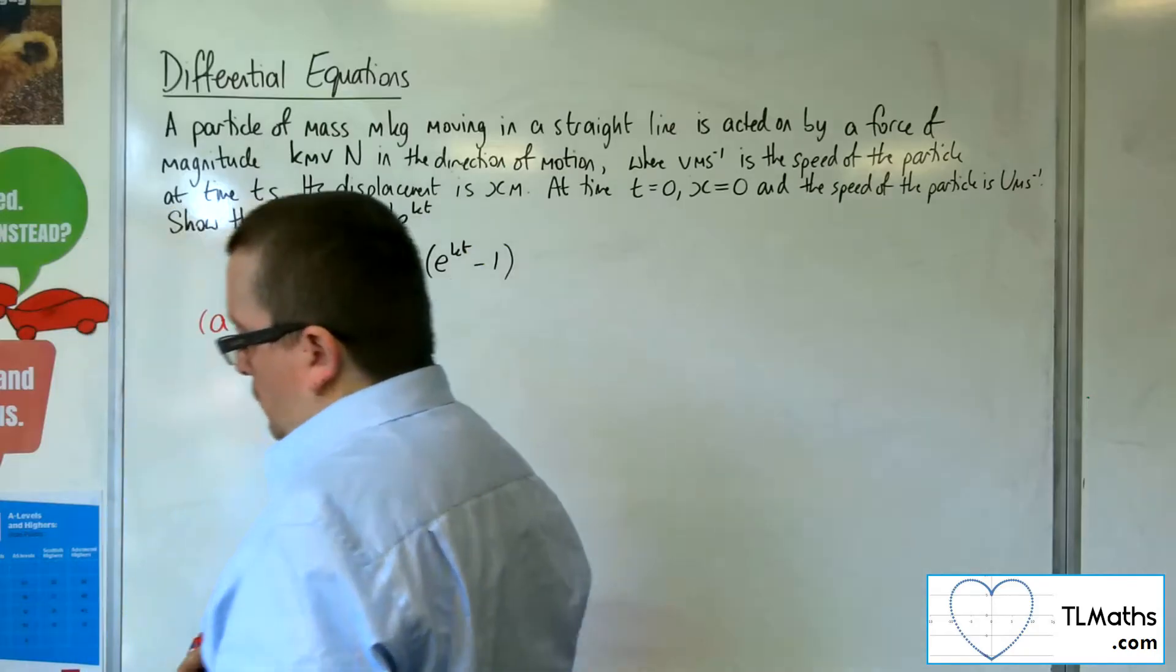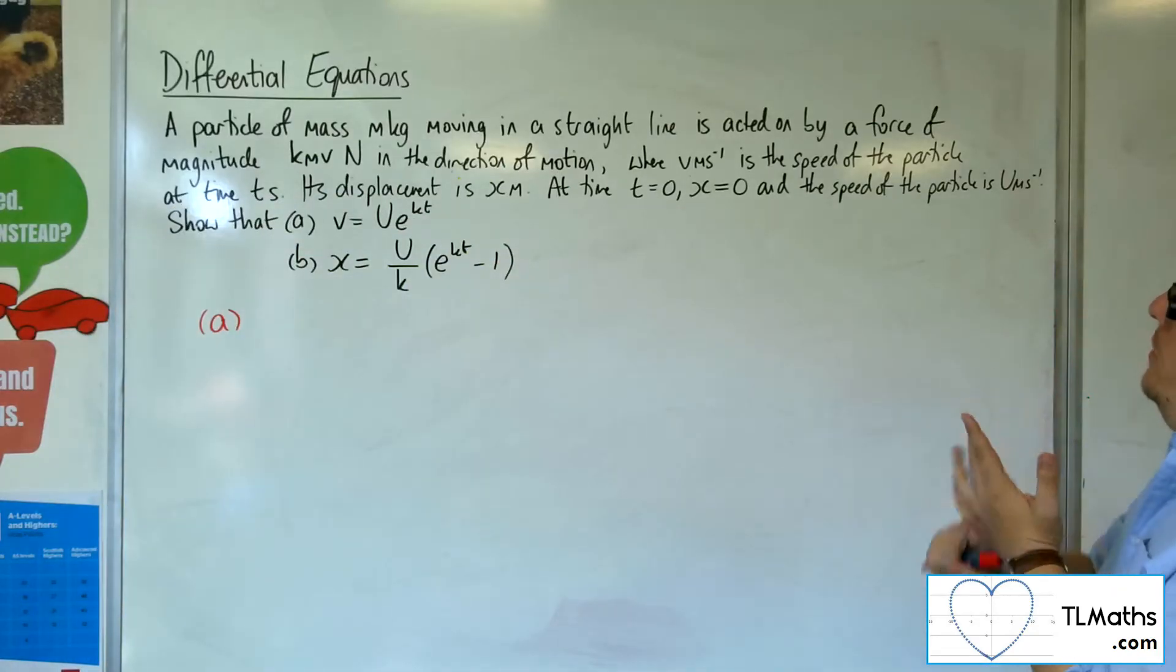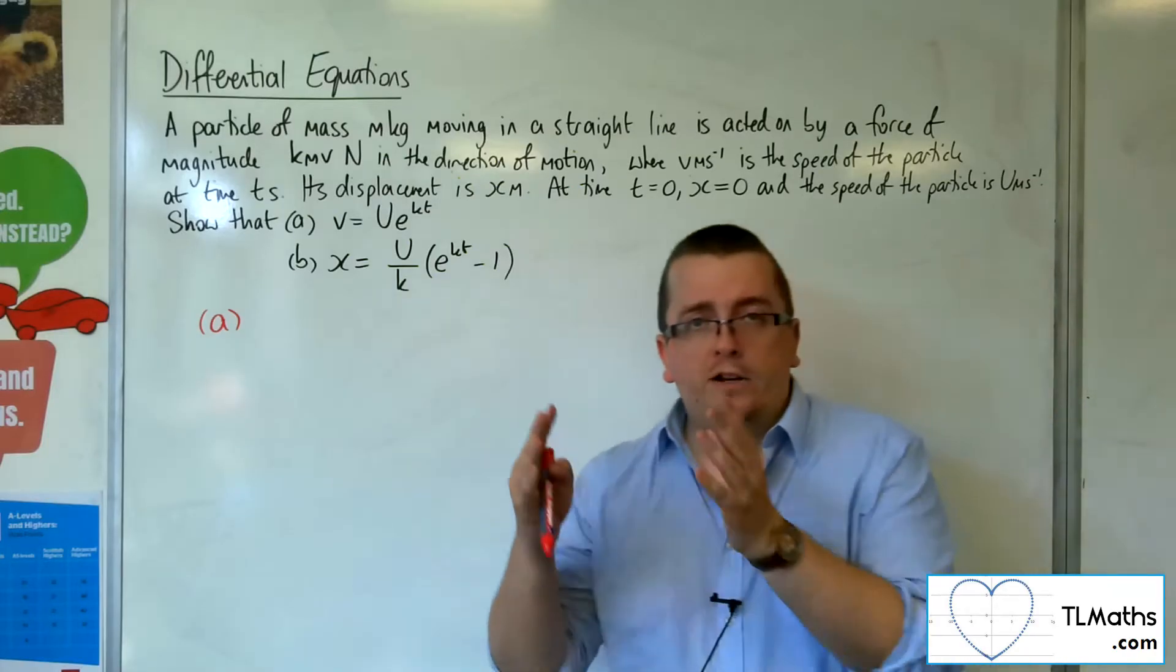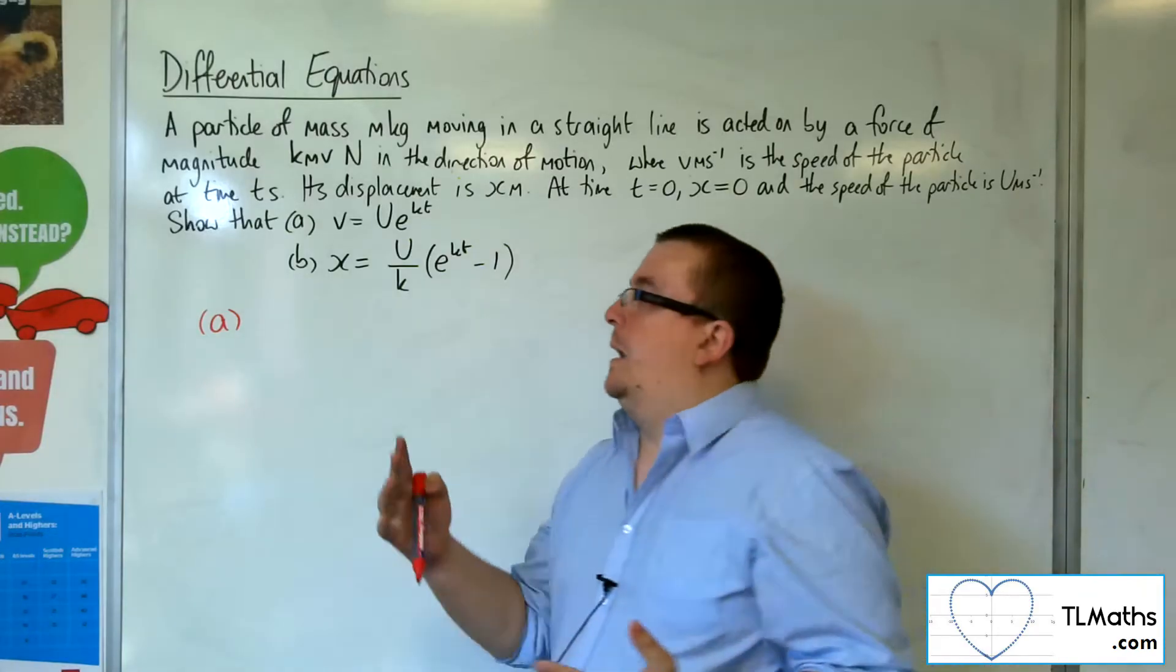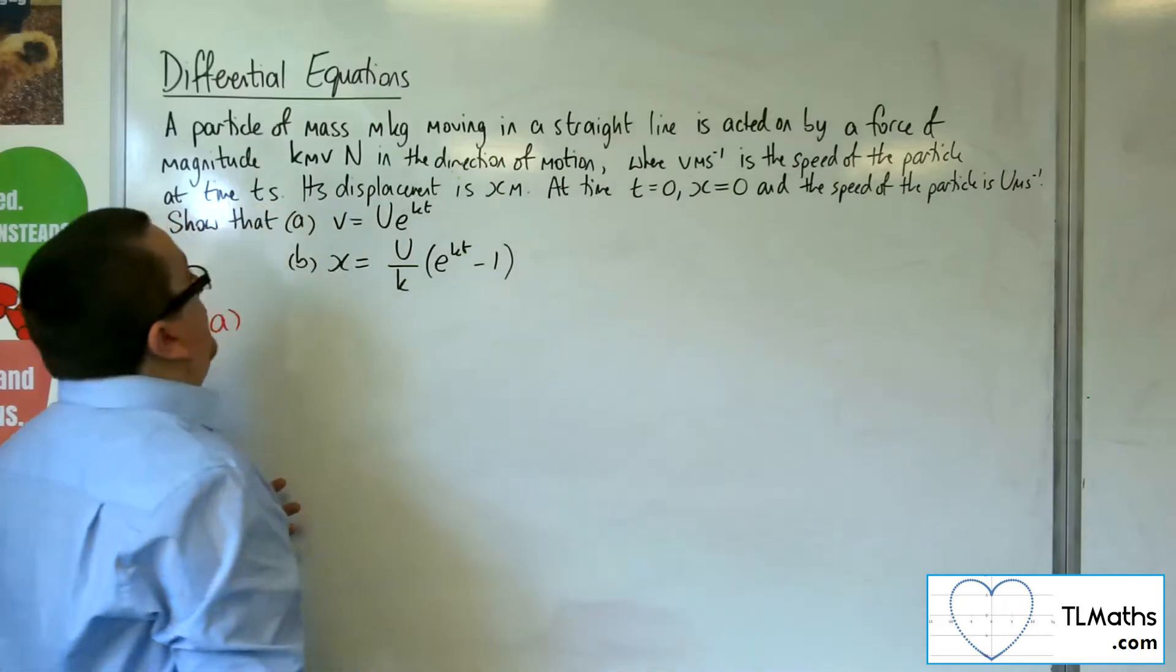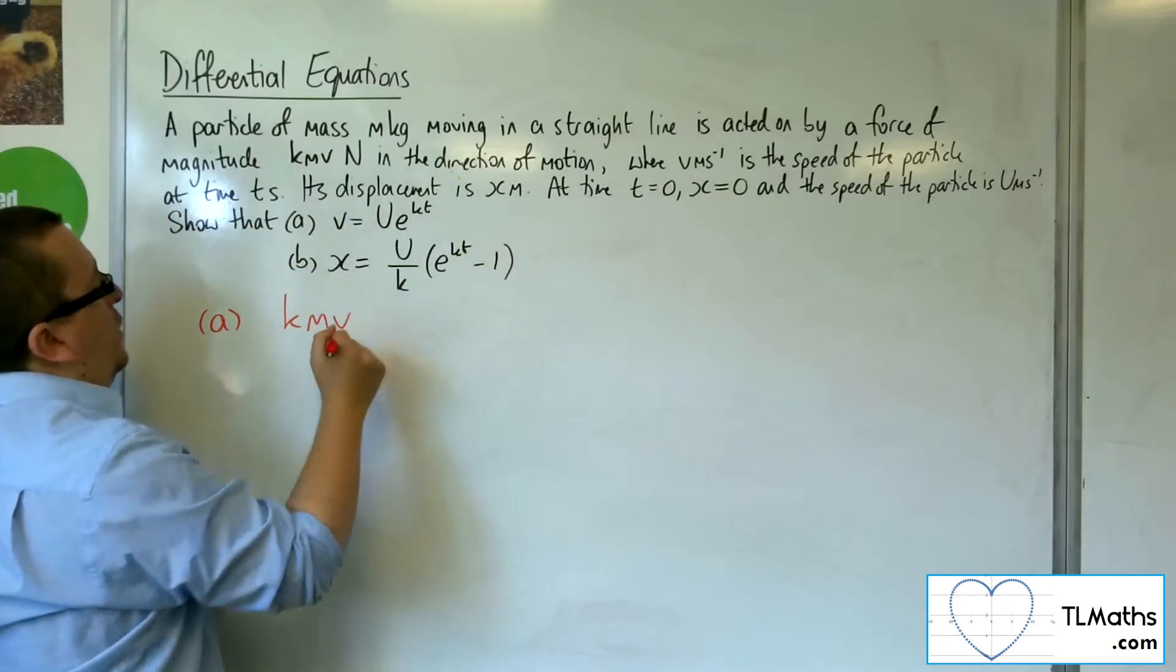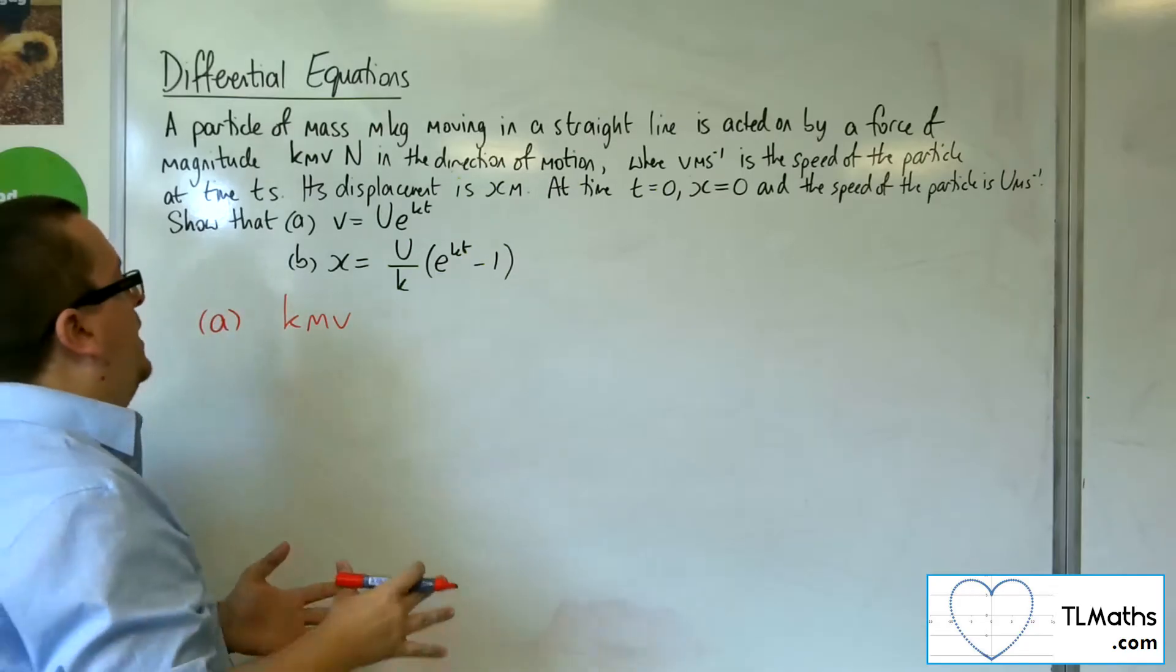A particle of mass m kilograms moving in a straight line is acted on by a force of magnitude kmv newtons in the direction of motion. The particle is moving along, we're going to resolve it horizontally. We've got kmv as the net force acting on the particle, and that's got to equal the mass times the acceleration.